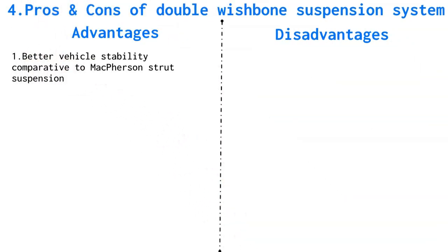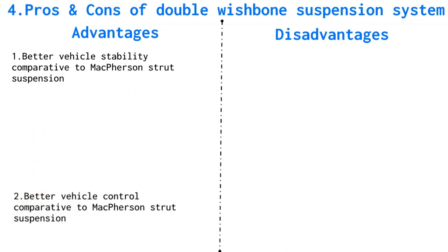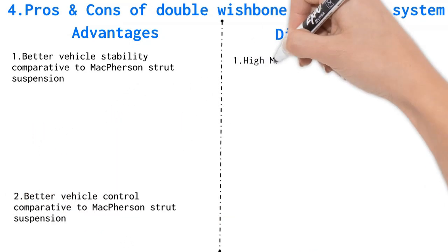Therefore, if you are looking for a suspension which allows you to control your vehicle with stability and consistency, then double wishbone suspension system should be your first choice.